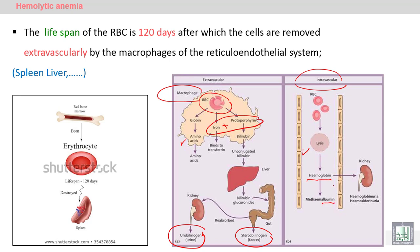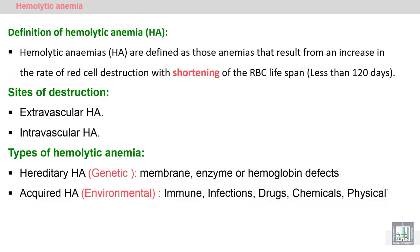Binding of hemoglobin to albumin in the blood leads to formation of methemalbuminemia. The hemoglobin also passes into the kidney to be secreted in the urine in the form of hemoglobinuria. Iron released from the hemoglobin leads to formation of hemosiderin in the urine, called hemosiderinuria.